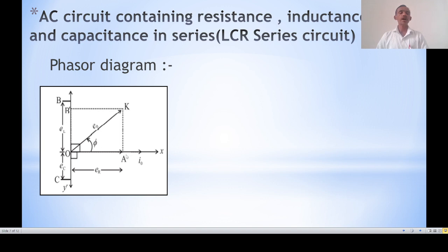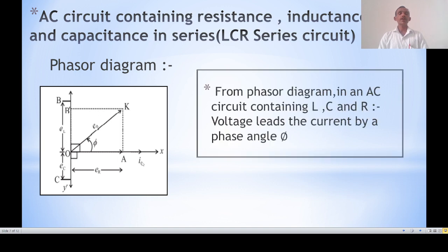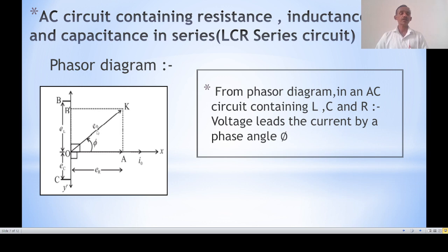E₀ has a phase difference of φ with respect to the current direction. From the phasor diagram of the LCR AC circuit, the voltage leads the current by phase angle φ. In the inductor, voltage has a phase difference of π/2 with current; in the capacitor it lags by π/2; in the resistance there is no phase difference. Combining all, the net phase difference between the net voltage and current is φ.